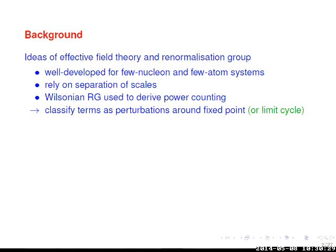Some background as to why we got into this approach. My background is in effective field theory and rigorous applications of the RG to develop power counting. These are well developed for few-nucleon systems and by analogy apply much better to few-atom systems close to Feshbach resonances where we have good separations of scales. The key thing is that separation of scales allowing expansion in ratios of low to high momentum. Wilsonian RG ideas can develop power counting, expanding around a fixed point or, with Efimov-type physics, around a limit cycle.